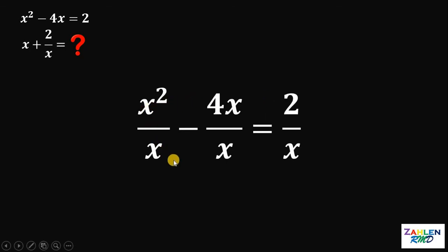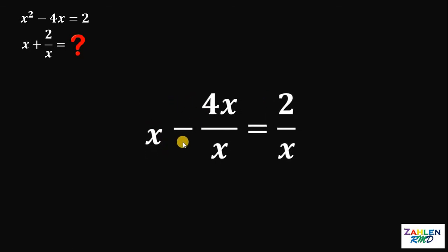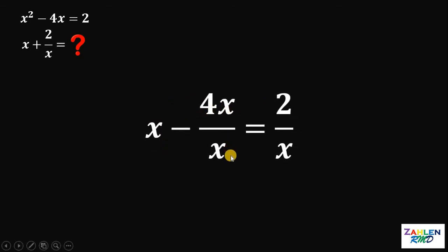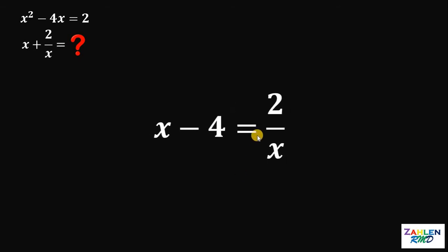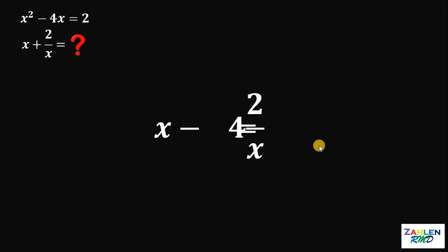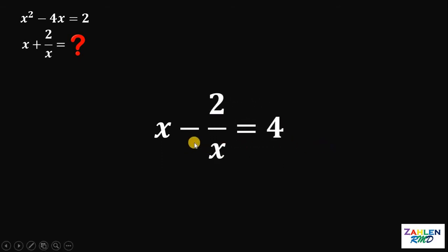x squared divided by x gives us x. 4x divided by x gives us 4. And the right side becomes 2 over x. Now, add 4 on both sides and subtract 2 over x on both sides, so we have x minus 2 over x equals 4.